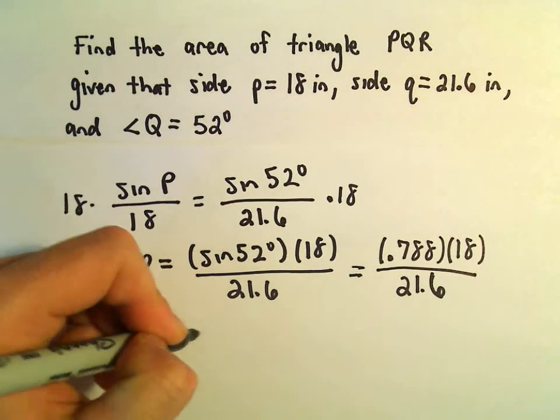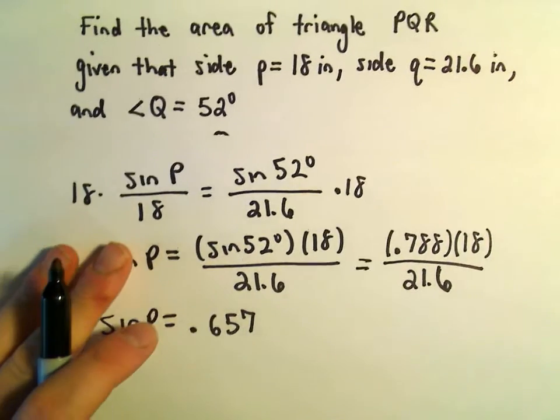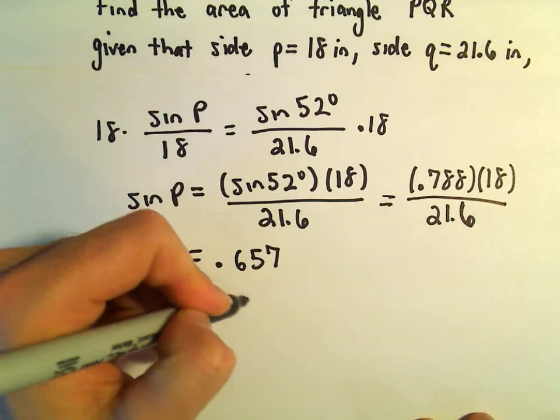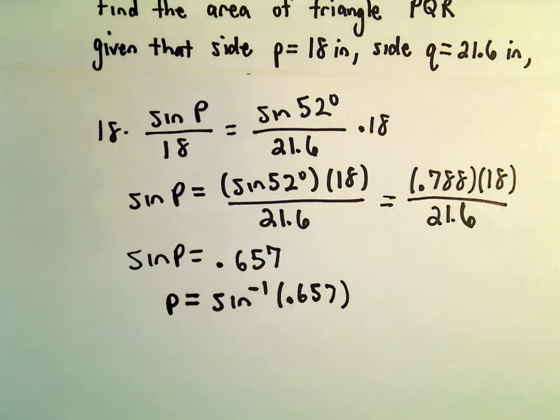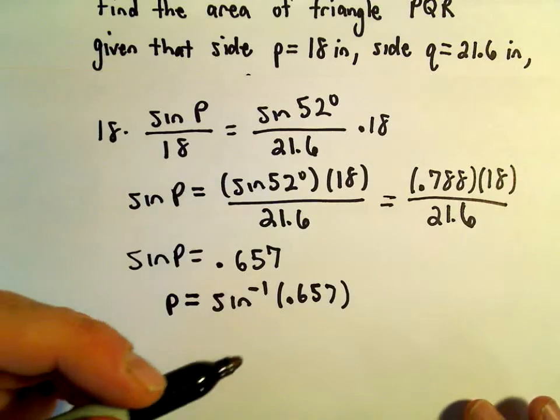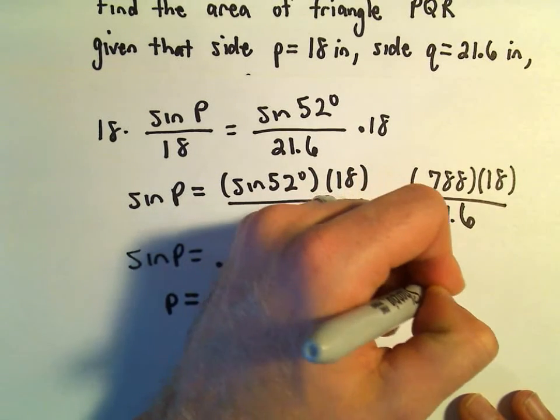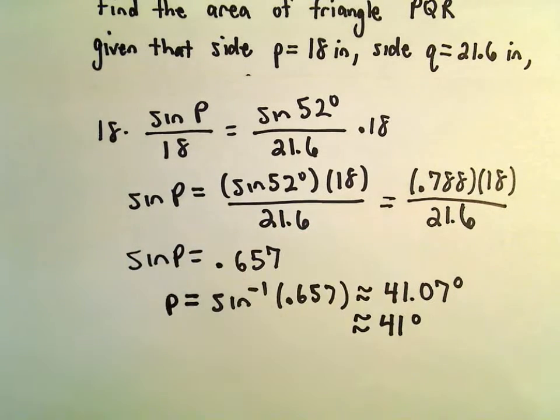I'm getting that to be roughly 0.657 after rounding. So now we can just do the inverse sine of both sides. So we'll get P is the inverse sine of 0.657. The inverse sine of 0.657, I'm getting that to be roughly 41.07 degrees, and I think I'm just going to round that off to 41 degrees.